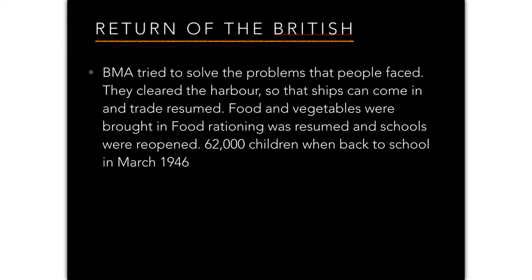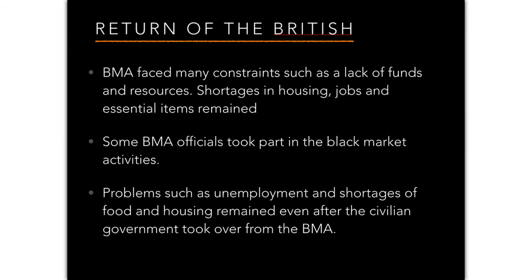The BMA tried to solve these problems — clearing the harbour so ships could resume trade, bringing in food and vegetables, resuming food rationing, and reopening schools. By March 1946, 62,000 school children had returned to school. However, the BMA faced constraints such as lack of money and resources. Some BMA officials even took part in black market activities due to the profits involved. Problems of unemployment and shortages of food and housing remained even after civilian government took over from the BMA.